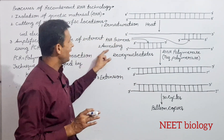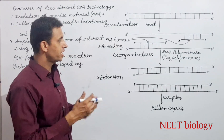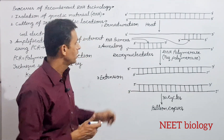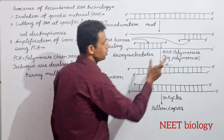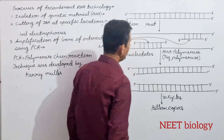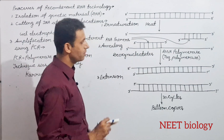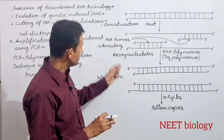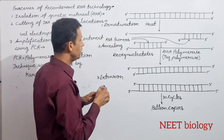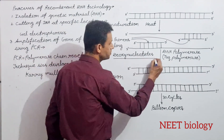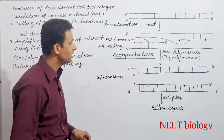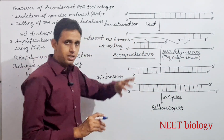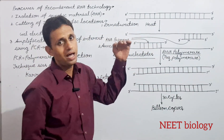Second step है annealing। अब culture के अंदर हम RNA primers देंगे जो DNA strands के complementary हैं — एक small RNA primer एक strand के लिए और दूसरा small RNA primer दूसरे strand के लिए। इसके साथ culture में deoxynucleotides भी देंगे।